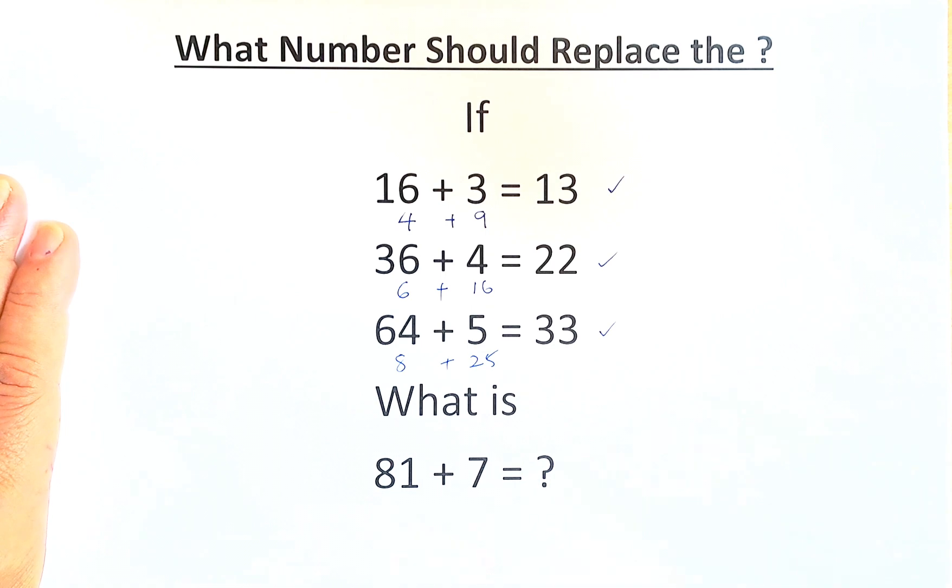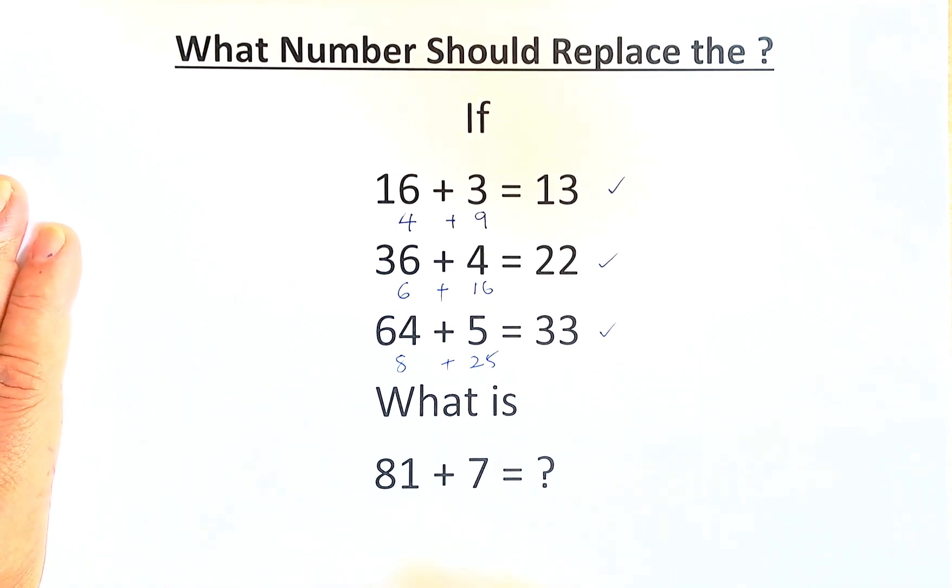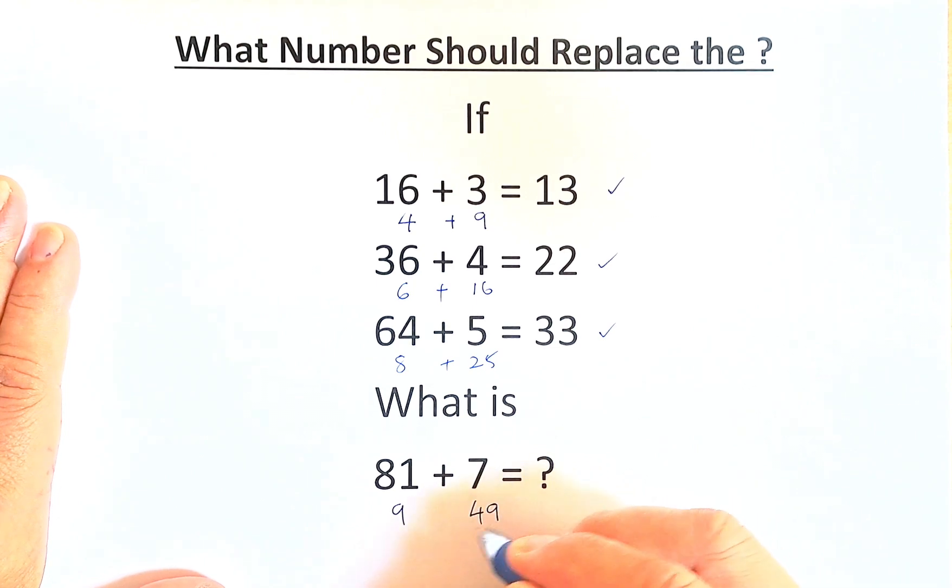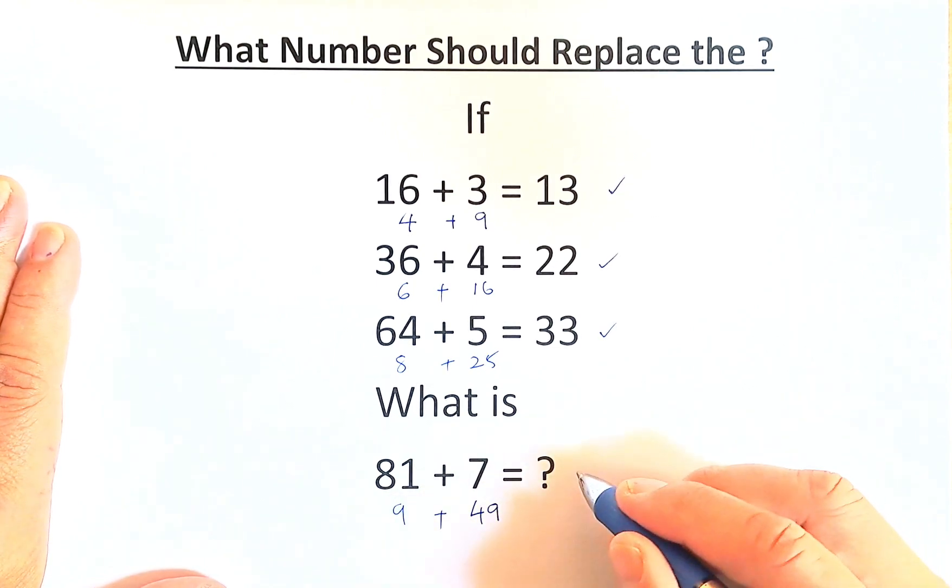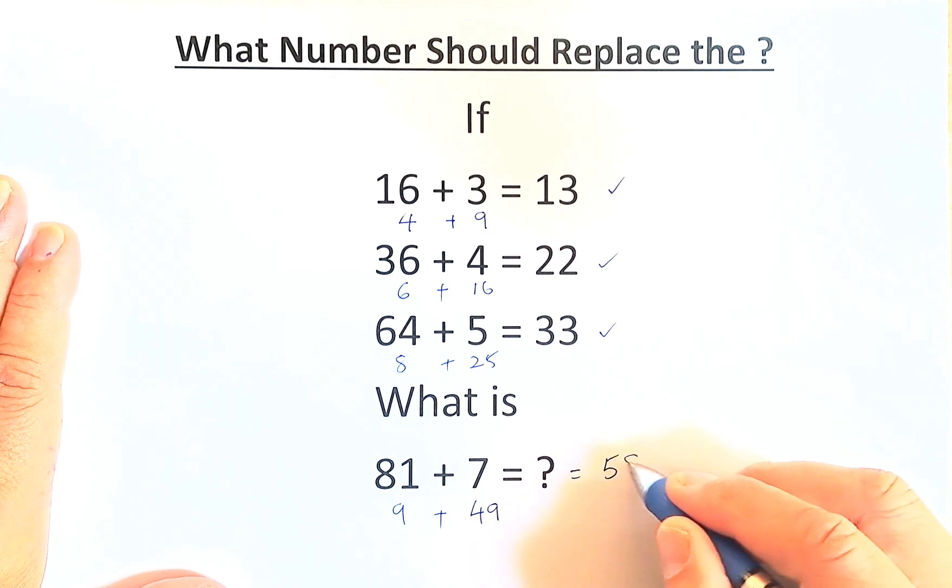Last but not least, we have 81 plus 7. Square root of 81 is 9. Square of 7 is 49. You add them up, 9 plus 49, and the question mark equals 58.